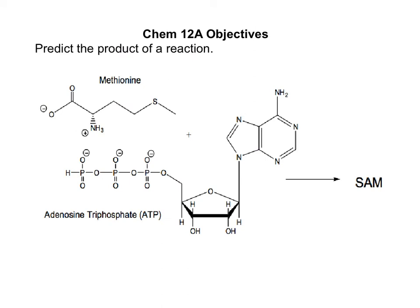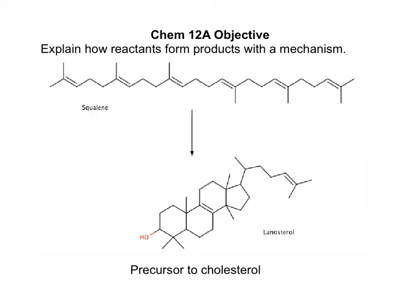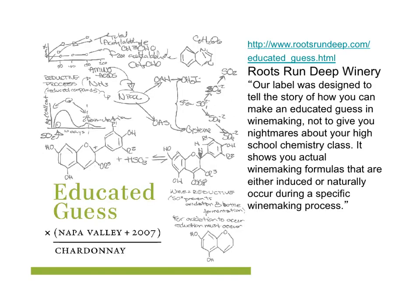One objective of this course is to predict the product of a reaction — at which atom or bond will a reaction occur to make product? Another objective is to explain how a reaction occurs with the reaction mechanism. For example, what is the order in which bonds break and form when squalene is converted to lanosterol? If you have never seen a reaction before, you can make an educated guess using your knowledge of reactivity principles to predict the product.